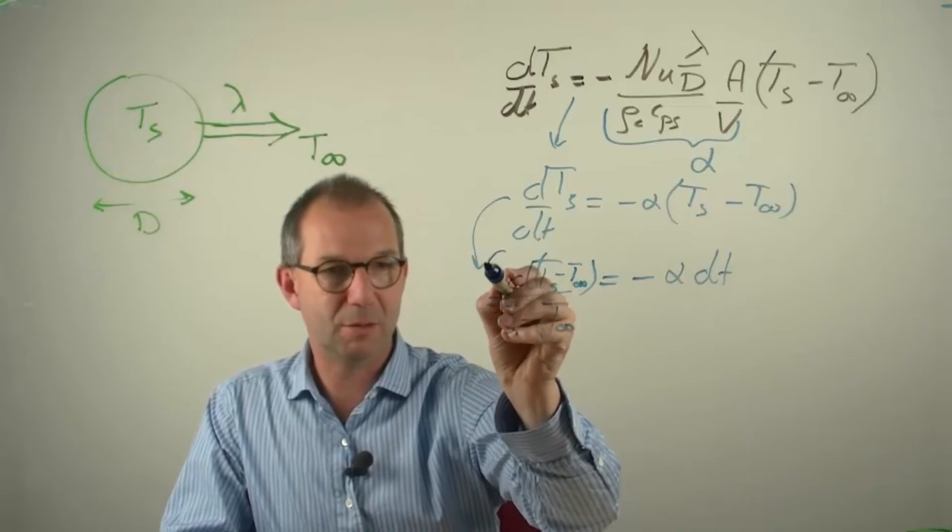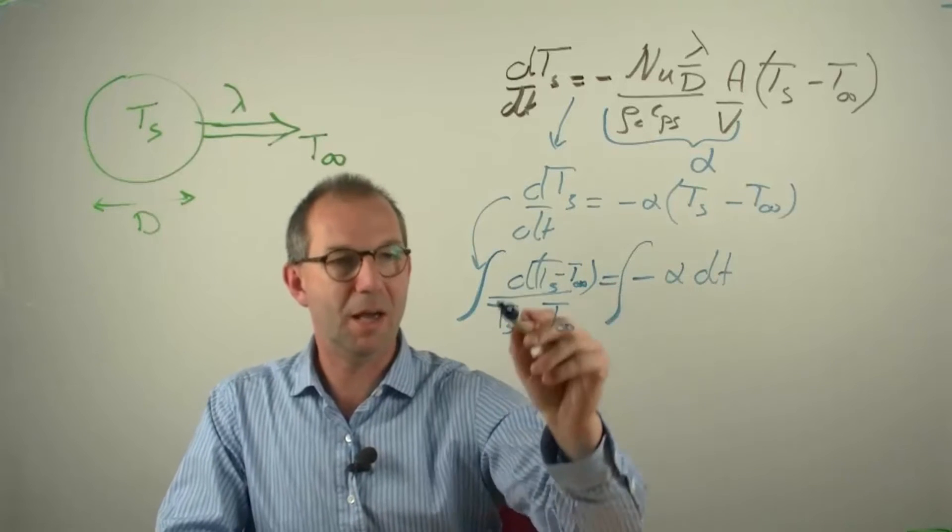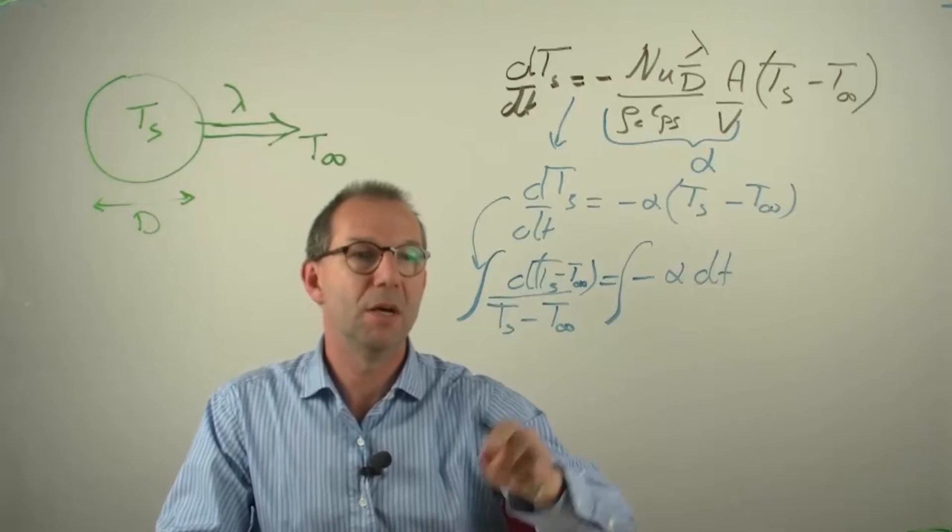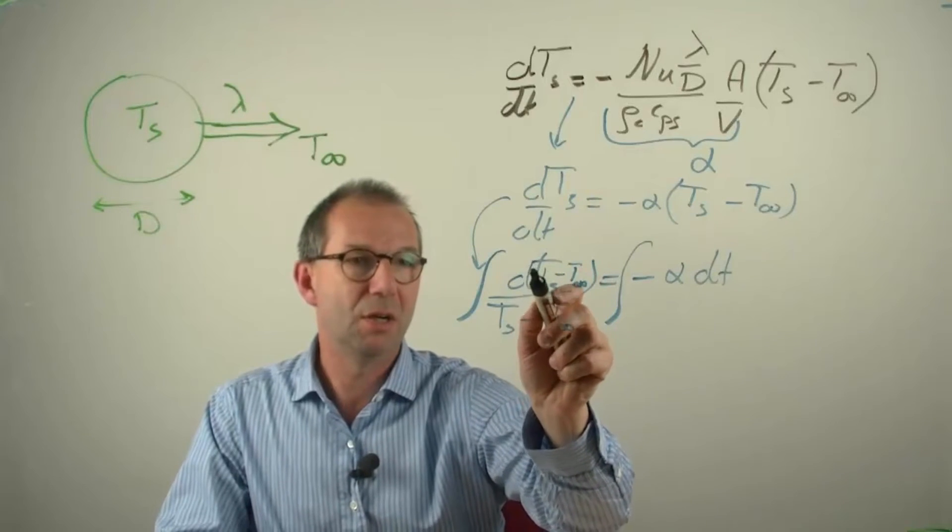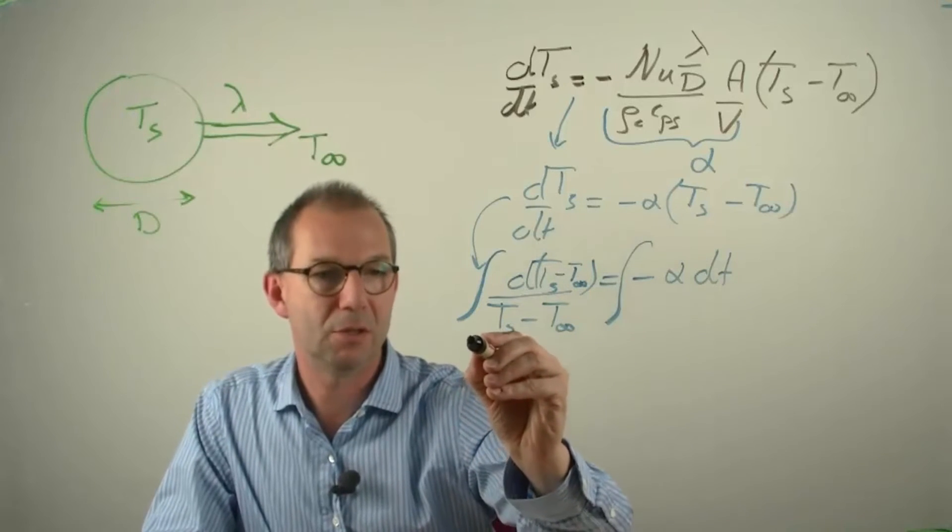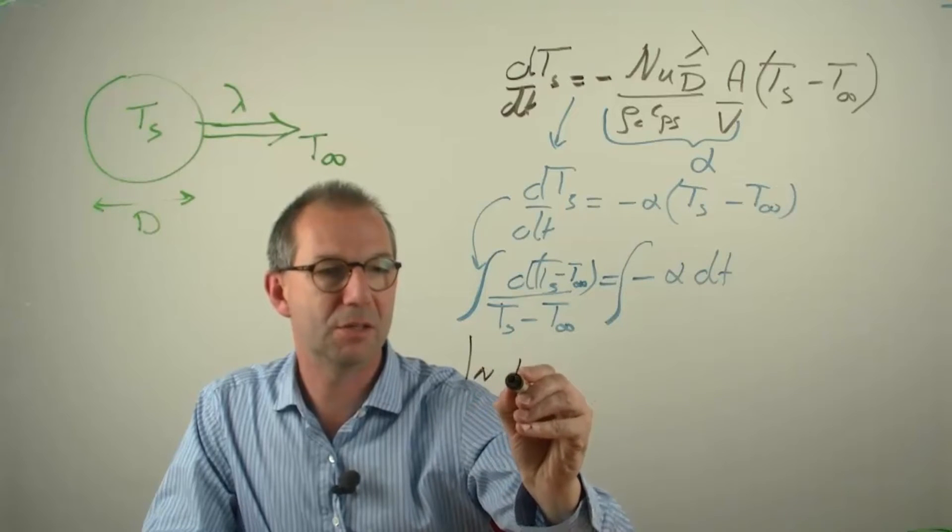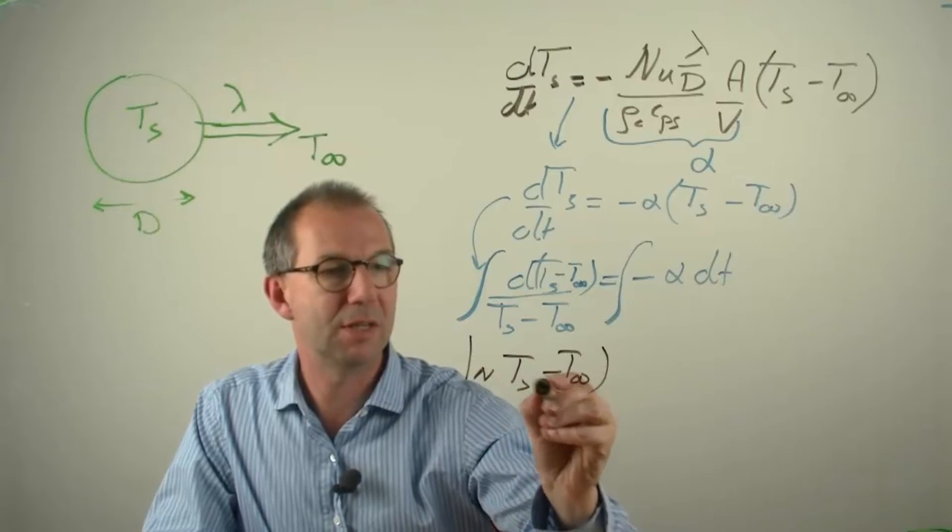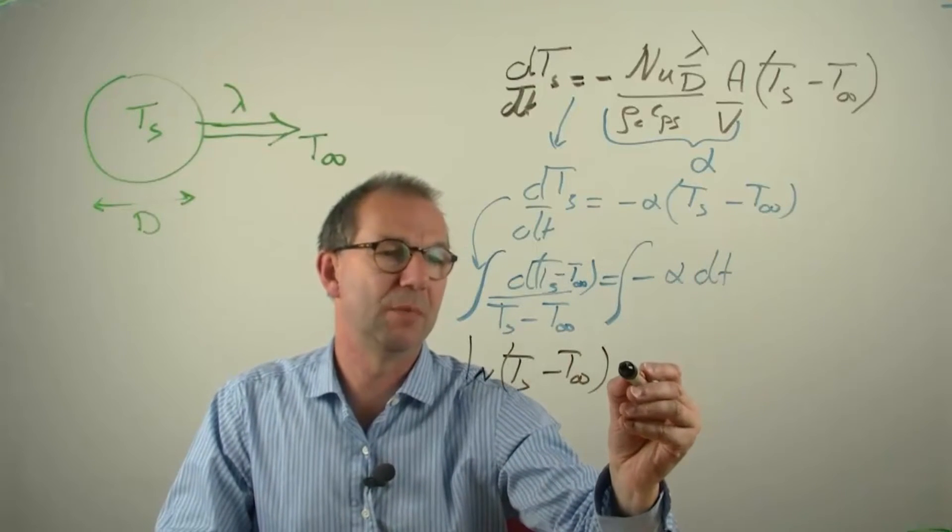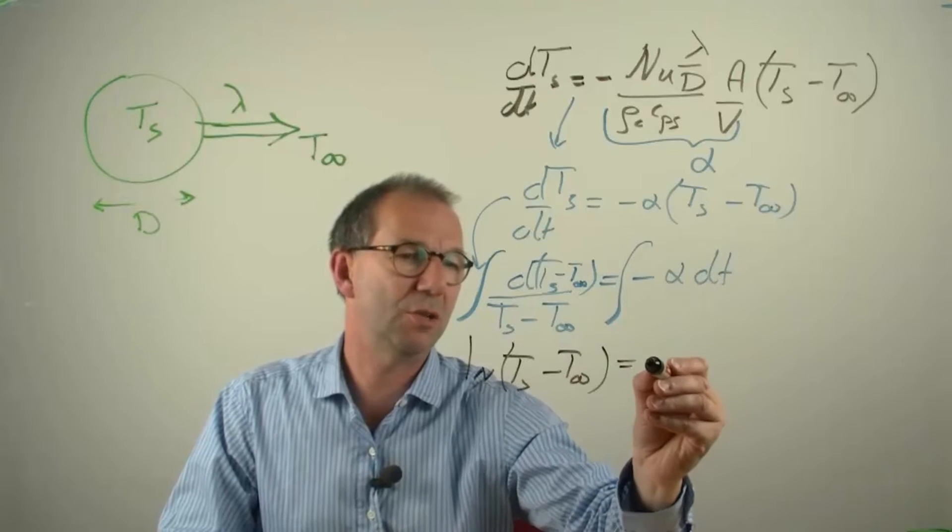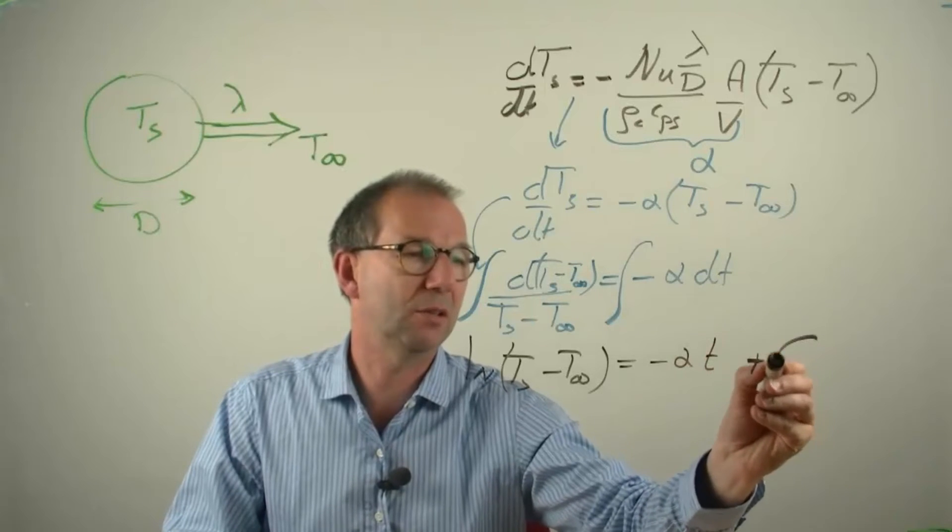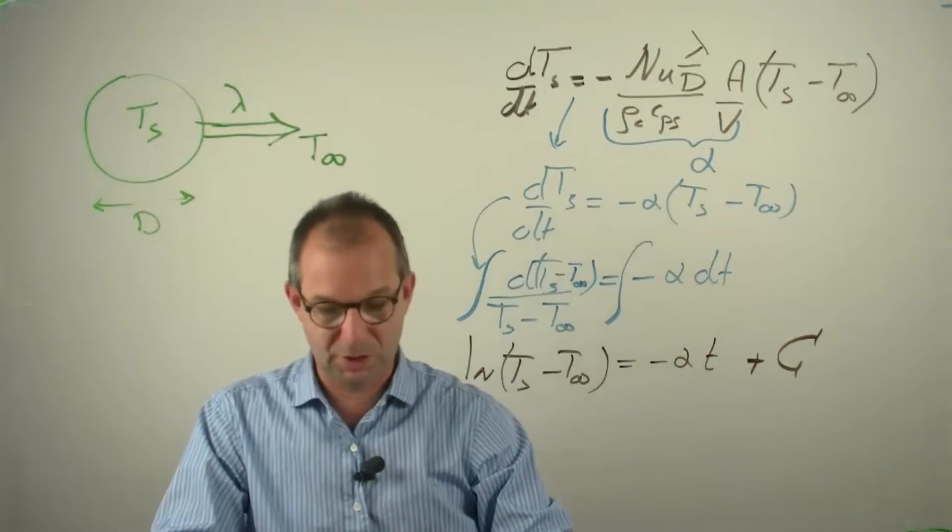And now, if I integrate both sides, I have standard functions that need to be integrated. This is in essence, D function over function. The primitive is the natural logarithm. So, here I get Ts-Tin natural logarithm. This side is easy. Alpha is a constant, doesn't depend on T. So, integrating a constant over T is just multiplying by T. And then obviously because I integrate, an integration constant slips in.